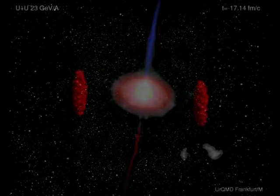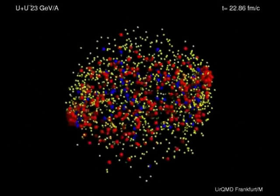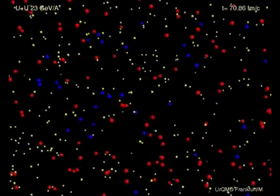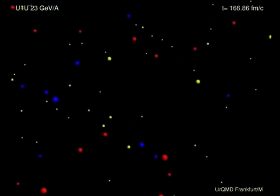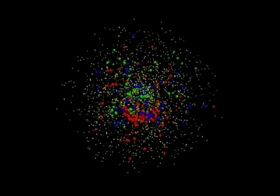The only possibility to compress nuclear matter in a laboratory is to accelerate heavy atomic nuclei to extreme high energies and let them collide. Here we can see a microscopic simulation of such a collision. Uranium nuclei, which are contracted due to their relativistic velocities, approach each other and collide, forming a hot and dense fireball for a very short moment.